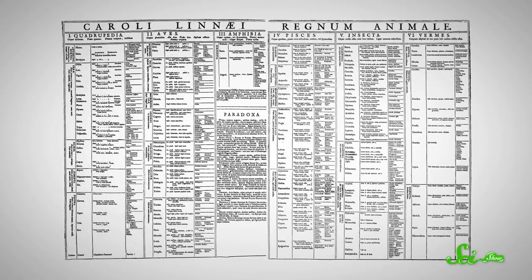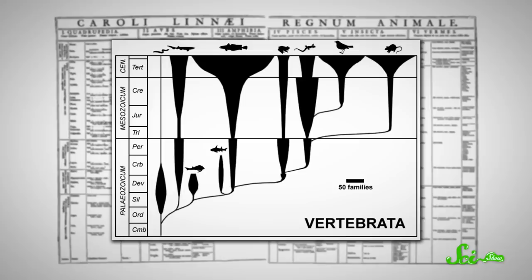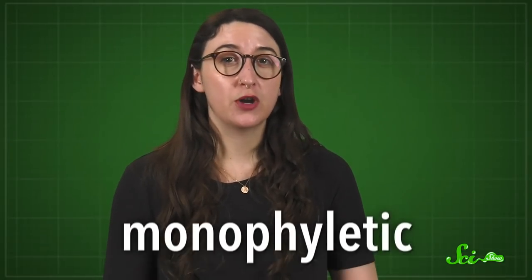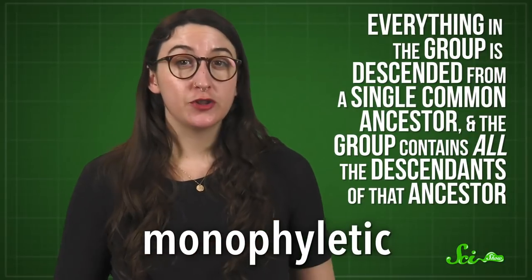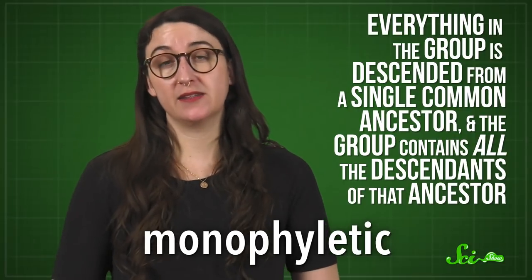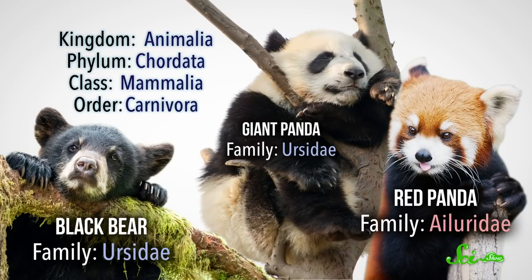In general, this works fairly well, but there are some weird quirks to doing things this way. Part of the problem arises from using a system and groups invented before Darwin, and trying to paste in evolutionary relationships over top of them. One of the ways scientists have updated the Tree of Life to reflect evolution is to try to keep groups like orders or families monophyletic — meaning everything in the group is descended from a single common ancestor, and the group contains all the descendants of that ancestor. The advantage is that this system can easily and quickly tell you about evolutionary relationships. Like, giant pandas are in the same family as bears, but not red pandas, so giant pandas are more closely related to a black bear than a red panda.